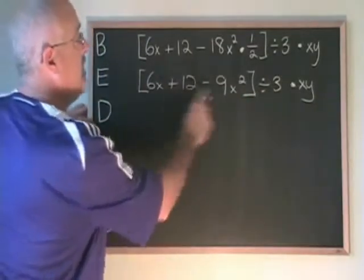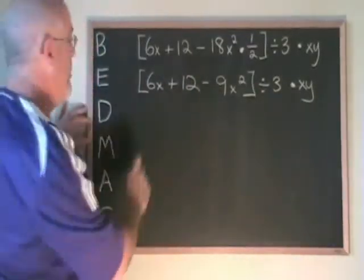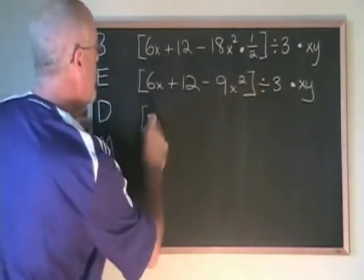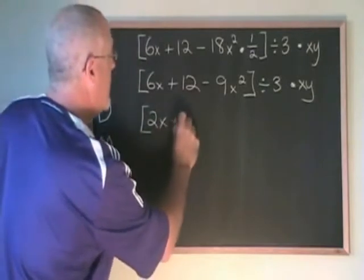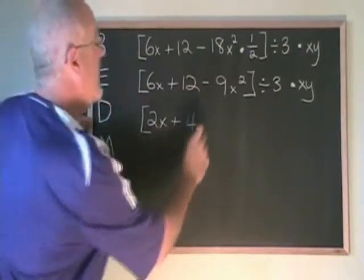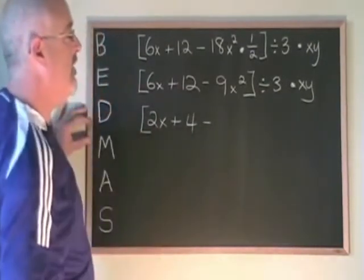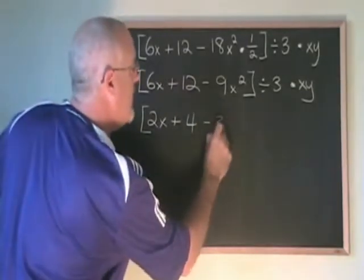We will write the answer to the division in a bracket. 6x divided by 3 is 2x. 12 divided by 3 is 4. Negative 9x squared divided by 3 is negative 3x squared.